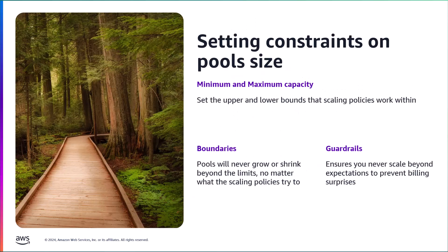WorkSpaces Pools has guardrails that set upper and lower bounds within which the scaling policies are allowed to work. When you configure your pool, you set minimum and maximum capacity values. Then, no matter what the scaling policies try to do, the pool will never grow or shrink beyond those limits. This prevents billing surprises by growing beyond expectations, while simultaneously always ensuring a minimum capacity level is met. These guardrails are not static and we will cover how you can move these boundaries for given time intervals based on your usage patterns.